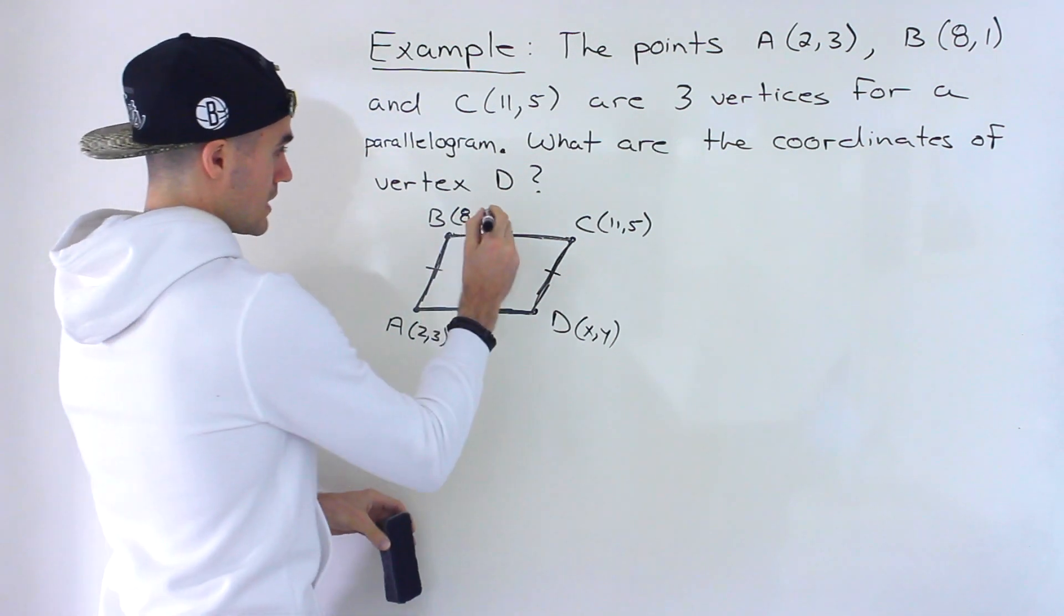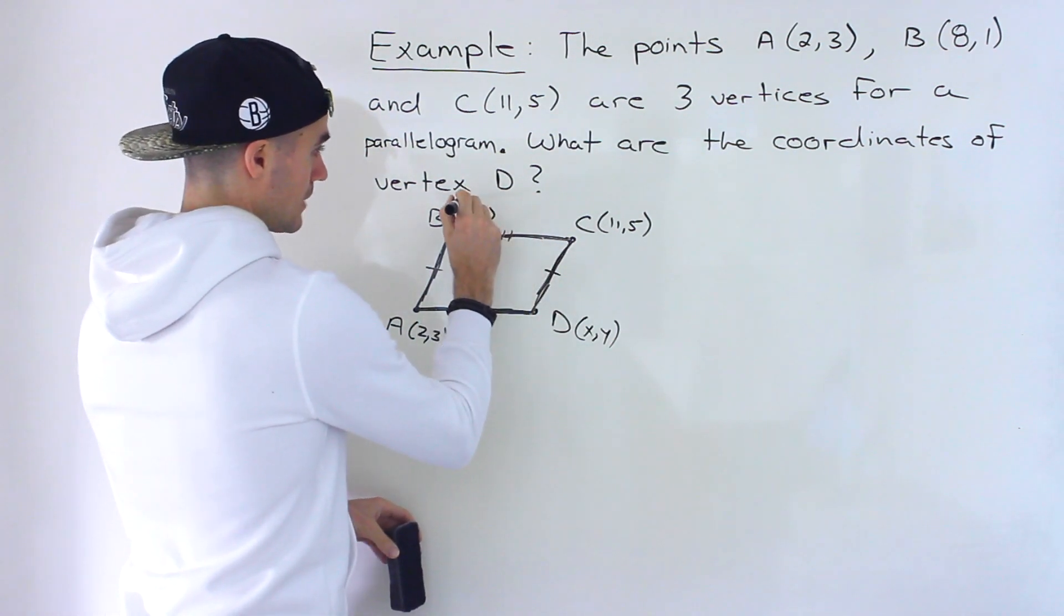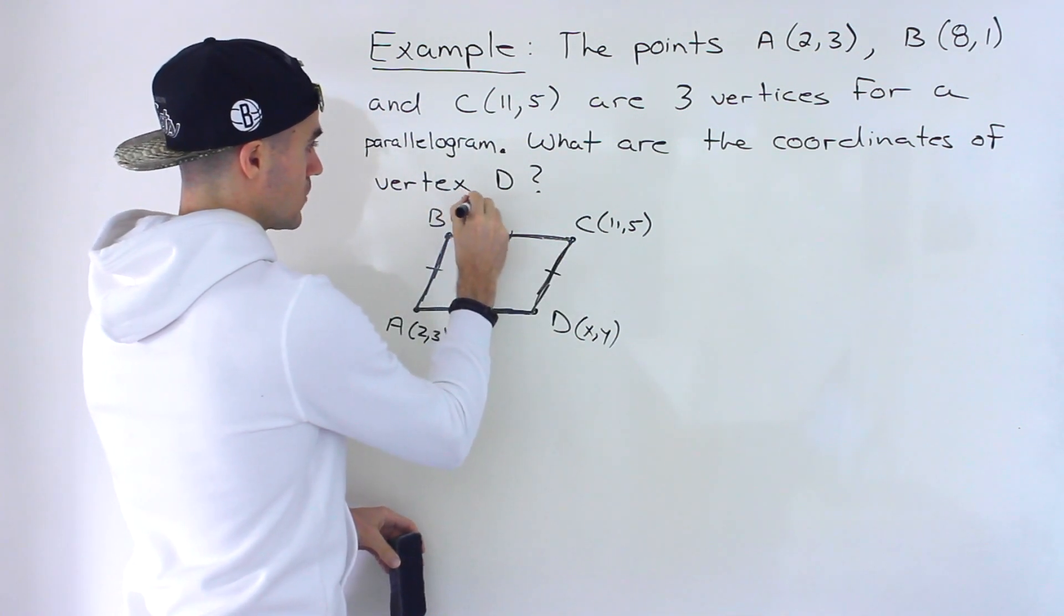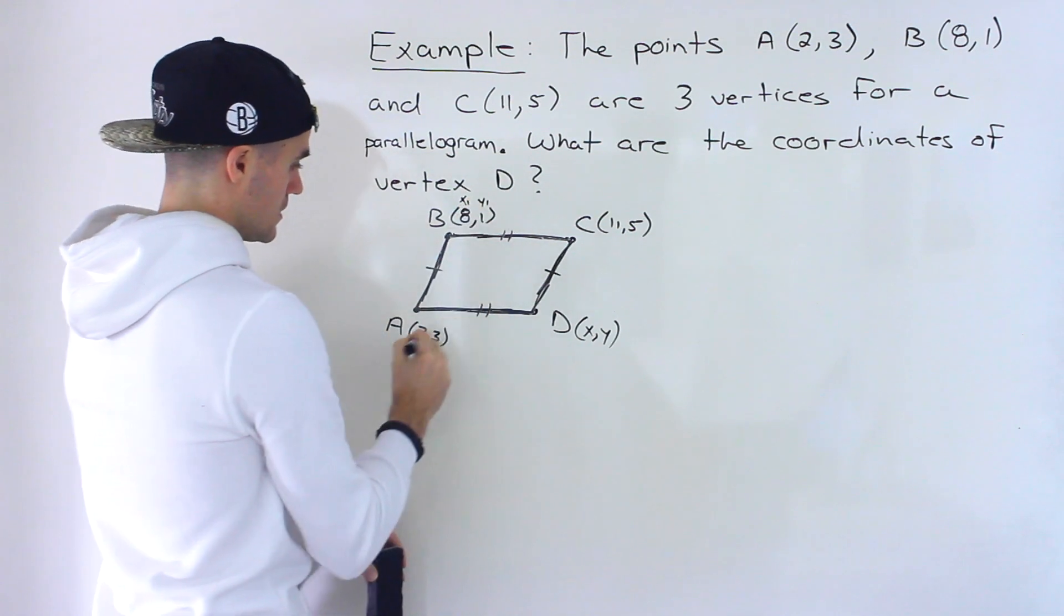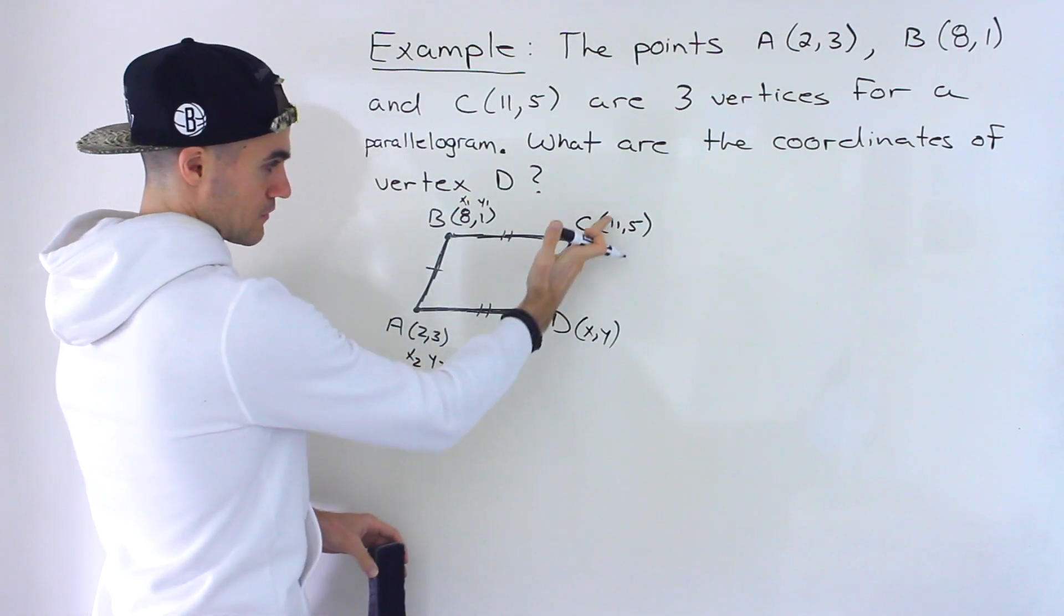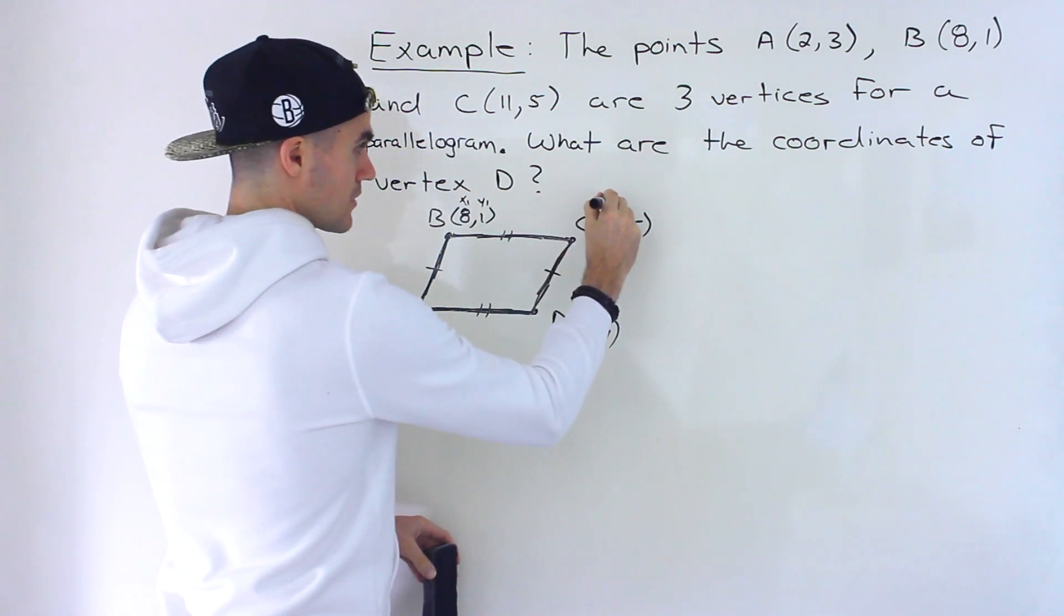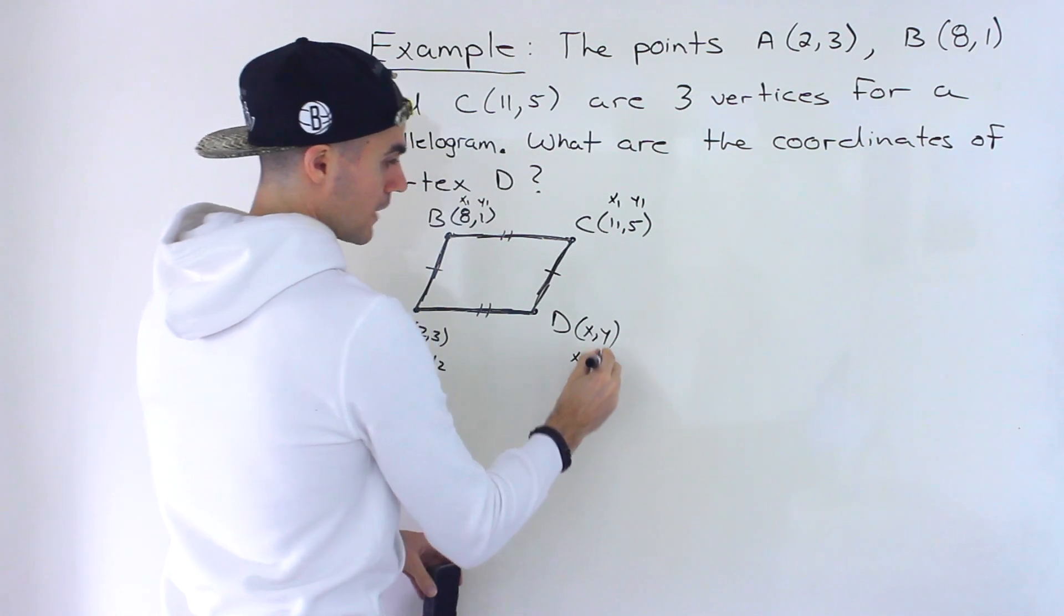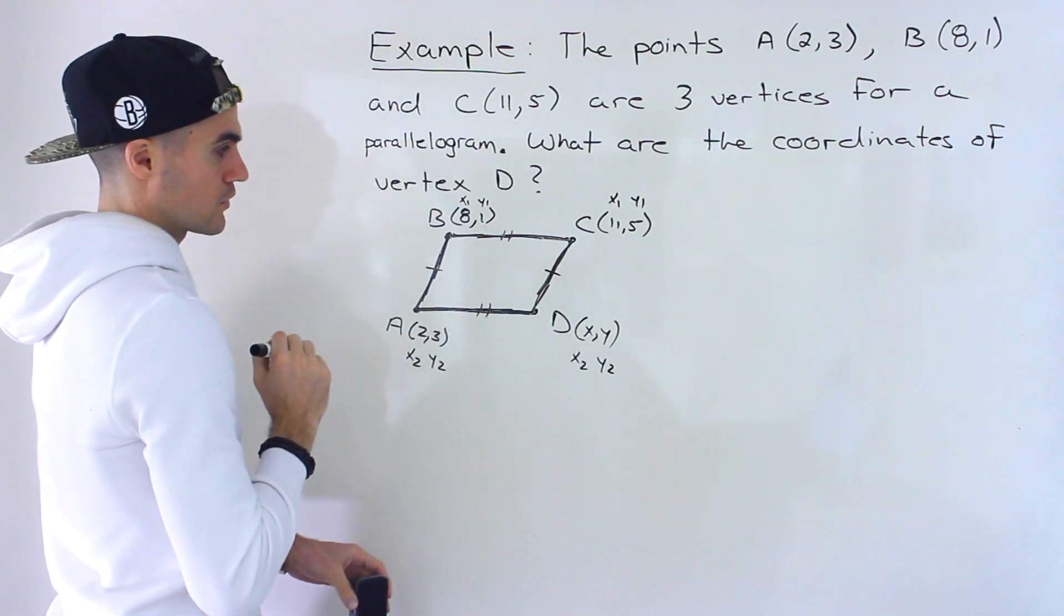So what I'm going to do is label these. So let's start off with AB being parallel to CD. So we'll have X1, Y1, then we'll have X2, Y2. And then for this line here, same thing, I'm going to label this X1, Y1, this is going to be X2, Y2, the X and Y that we're solving for.